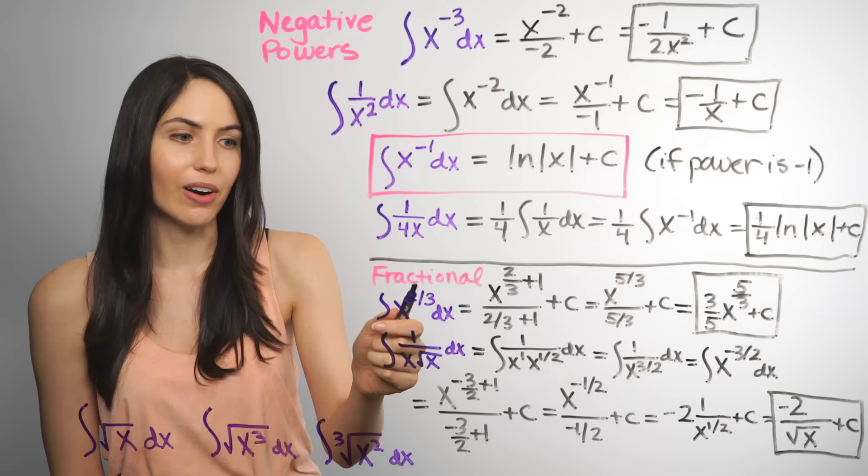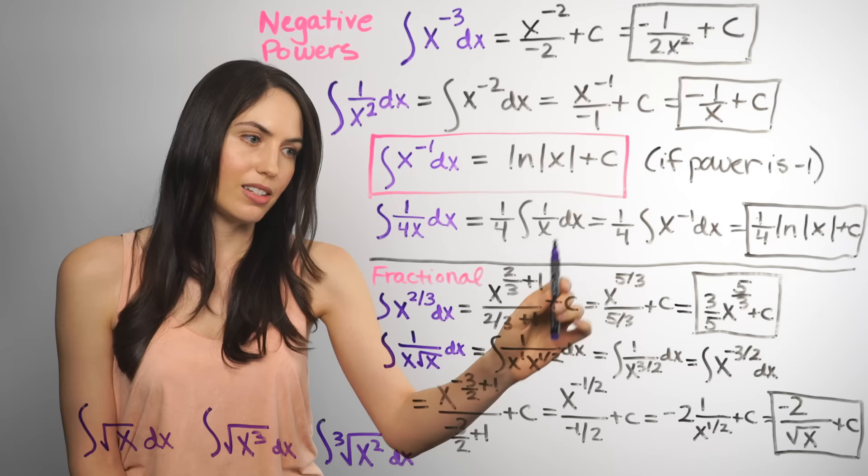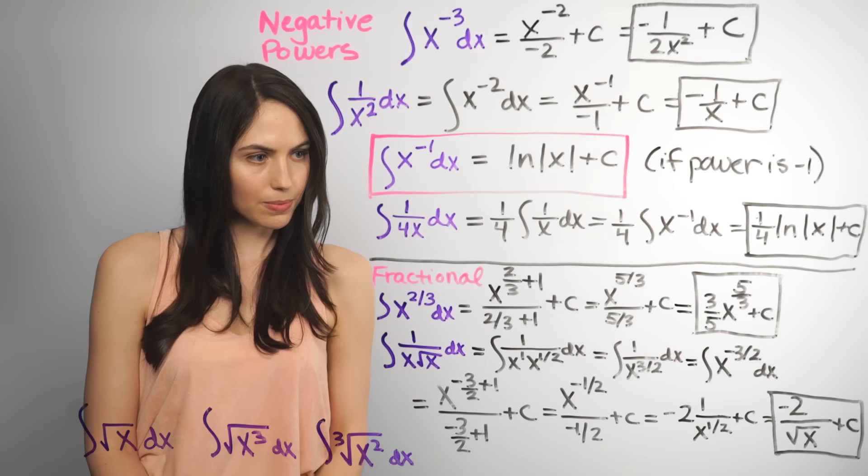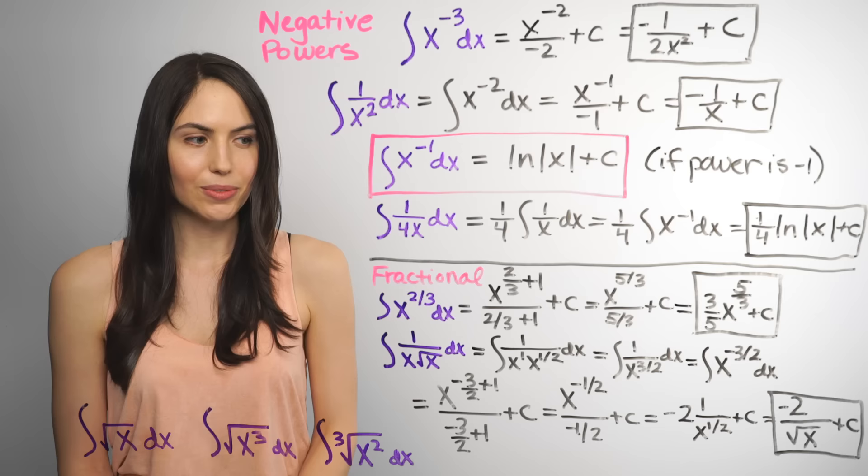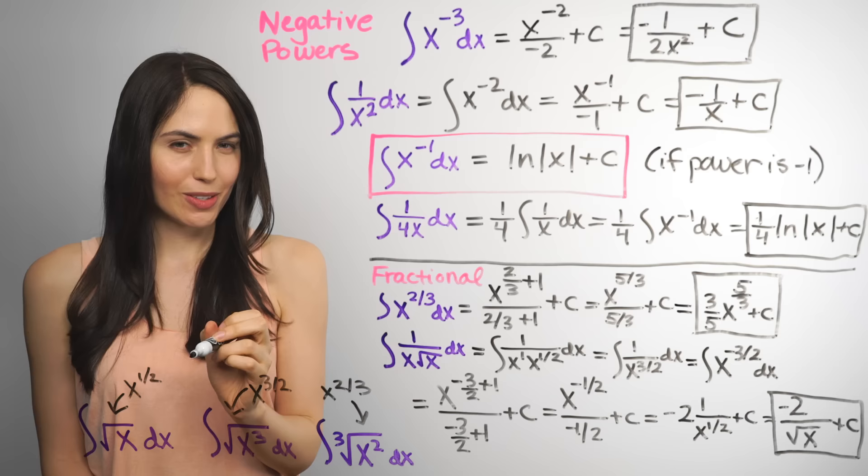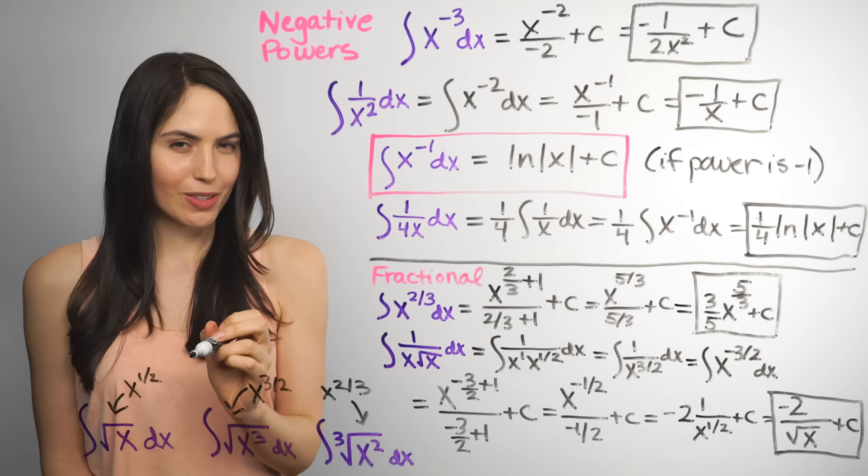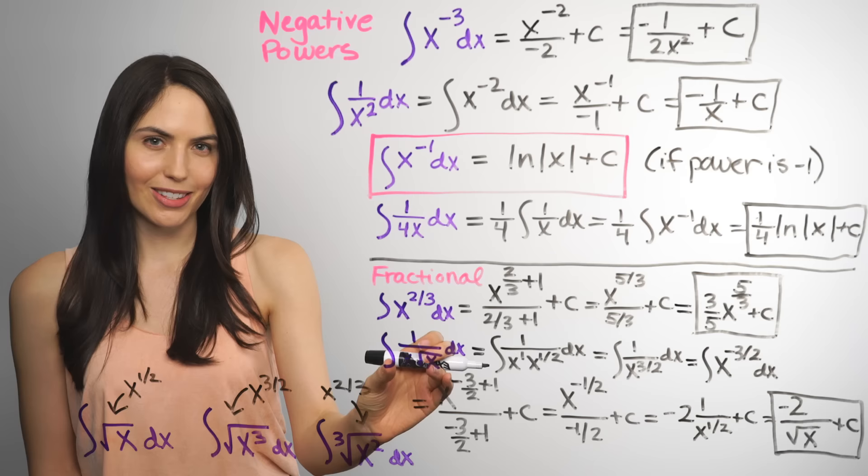If you have a fractional power, you can still use the power rule. And again, I'm not going to insult you with a lot of algebra talk, but friendly reminders. Adding 1 to a fraction, you get a common denominator. Dividing by a fraction is the same as multiplying by its reciprocal. And what if you have a root in your integral? You might have already guessed, but you want to rewrite it as a power. The square root becomes a 1 half power. The square root of x cubed is x to the 3 halves power. The cube root of x squared is x to the 2 thirds power. And then you can use the power rule after that. And from there, it's the same kind of integration we were doing before. I know you can handle that.